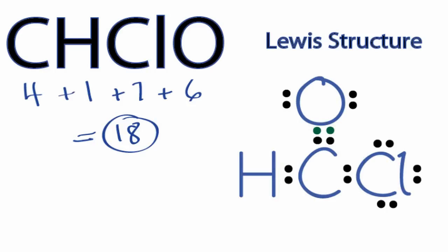So that's it. We've used all 18 valence electrons, and each of the atoms has the full outer shell. That's the Lewis structure for CHClO. This is Dr. B, and thanks for watching.